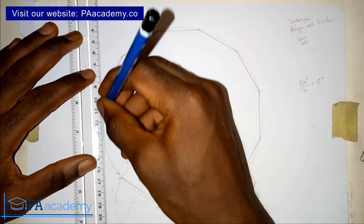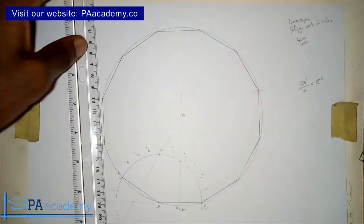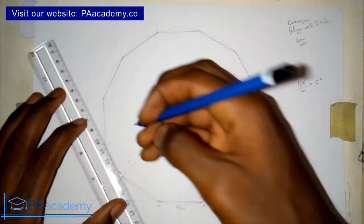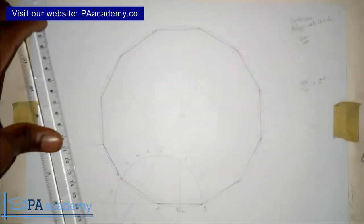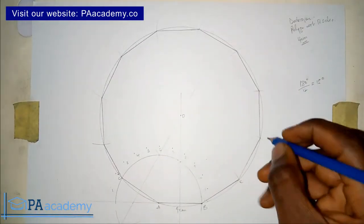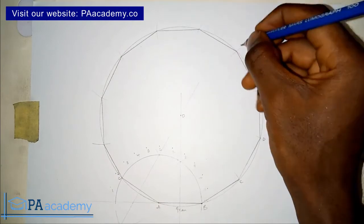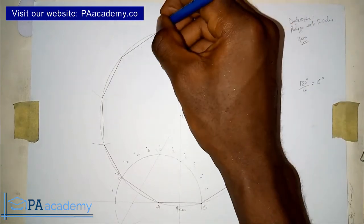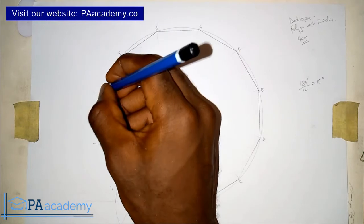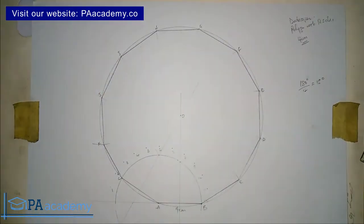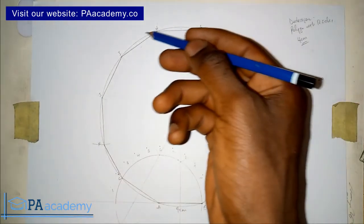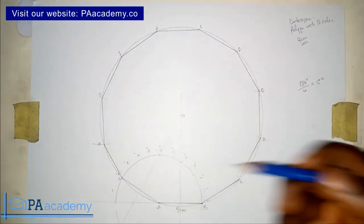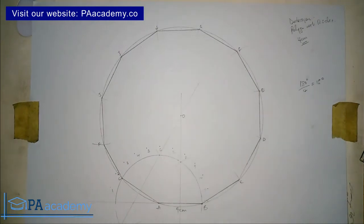If you're interested in getting these technical engineering drawing tools, I'll leave a link in the description. Let's label the remaining vertices C, D, E, F, G, H, I, J, K. You can now count the 12 sides: 1, 2, 3, 4, 5, 6, 7, 8, 9, 10, 11, and 12. This is the first method for drawing a regular dodecagon when given the length of the side — all sides are 4 centimeters.